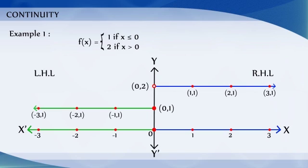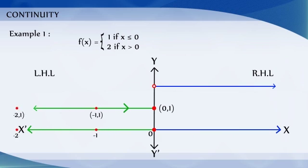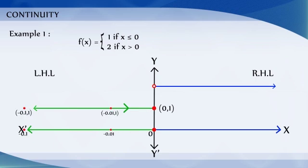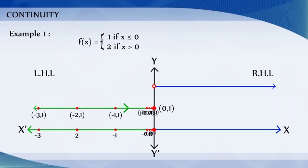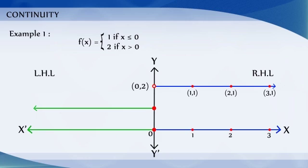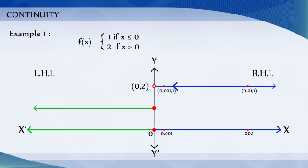From the graph, we can observe that at the points near and to the left of 0, that is at points like minus 0.1, minus 0.01, minus 0.001, etc., the value of the function is 1. Similarly, at the points near to the right of 0, that is at points like 0.1, 0.01, 0.001, etc., the value of the function is 2.